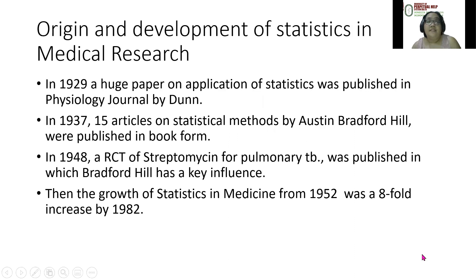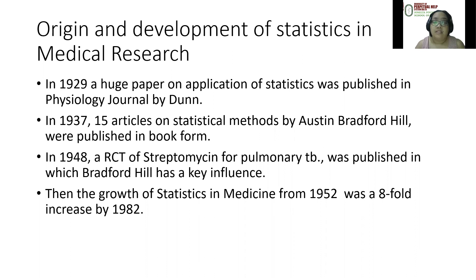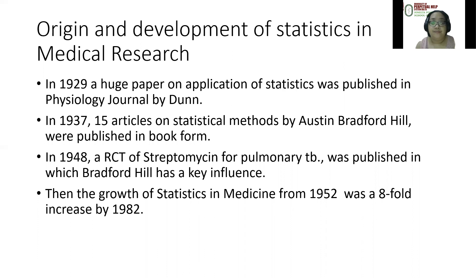The origin and development of statistics in medical research: In 1929, a huge paper on application of statistics was published in a physiology journal by Dunn. In 1937, 15 articles on statistical methods by Austin Bradford Hill were published in book form. In 1948, a randomized controlled trial of streptomycin for pulmonary tuberculosis was published in which Bradford Hill had a key influence. The growth of statistics in medicine from 1952 was at an eightfold increase by 1982.